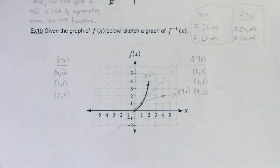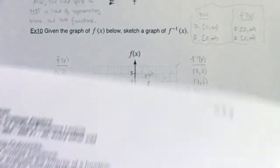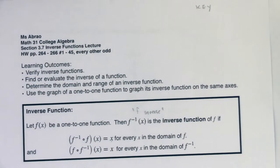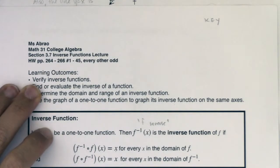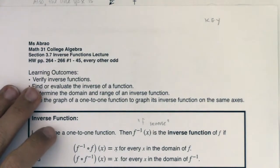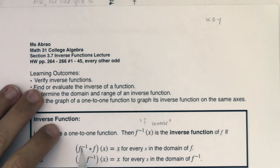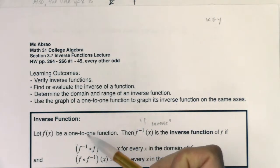With that, we're done with section 3.7. Let's remind ourselves what we learned. We should be able to verify inverse functions—that's when you do f inverse of f(x) and check if you get back to x, then check f of f inverse of x. Both conditions must be met for functions to be inverses of one another.